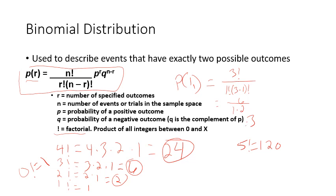Now for the second half of the formula: P is the probability of a positive outcome. In this case, the probability of rolling a one is one-sixth, which is approximately 0.1667. That's to the R power — to the first power. Then Q is the probability of a negative outcome, the complement of P — five-sixths, or 0.8333 — to the N minus R power, which is the second power. Squaring 0.8333 gives us 0.694.